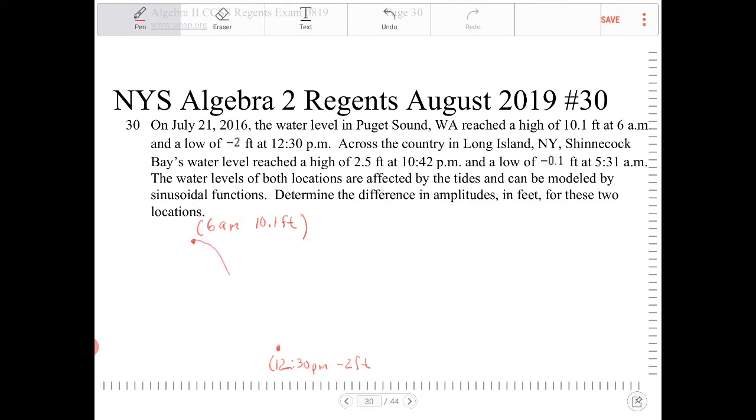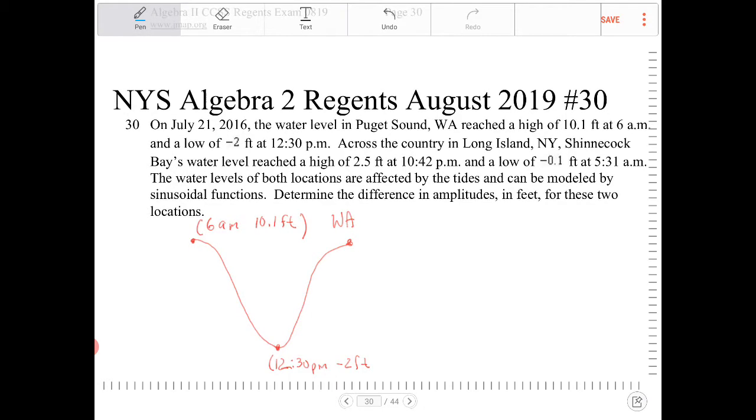And this is Washington. I want to use a different color. Across the country in Long Island, New York, Shinnecock Bay's water level reached a high of 2.5 feet at 10:42.